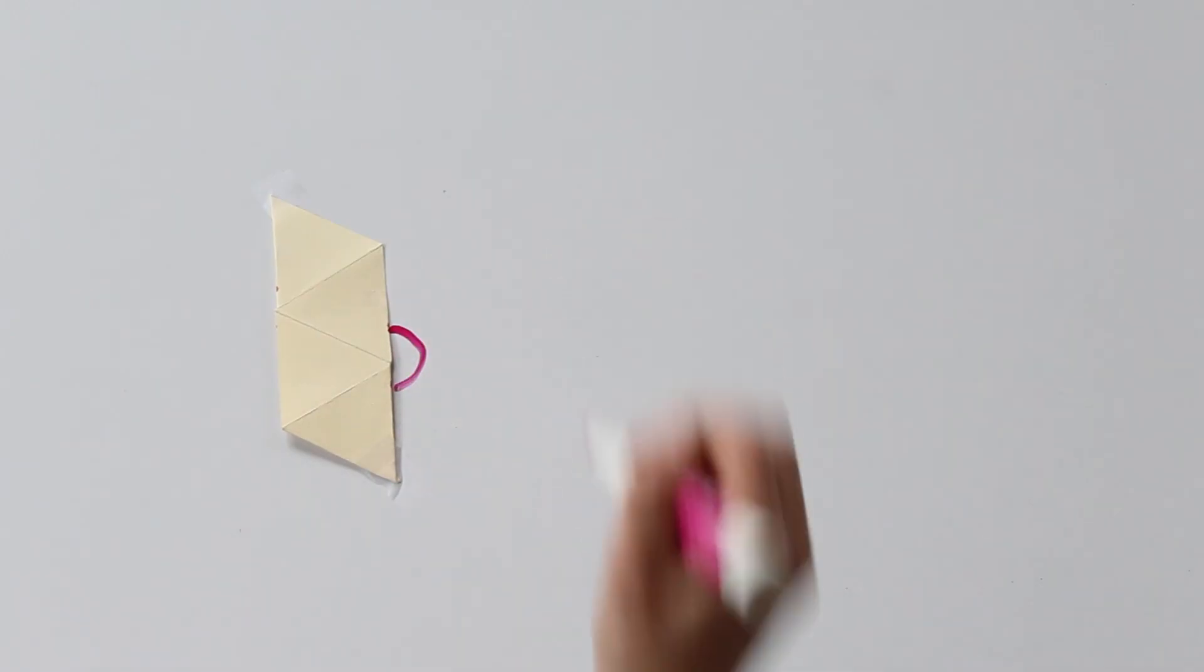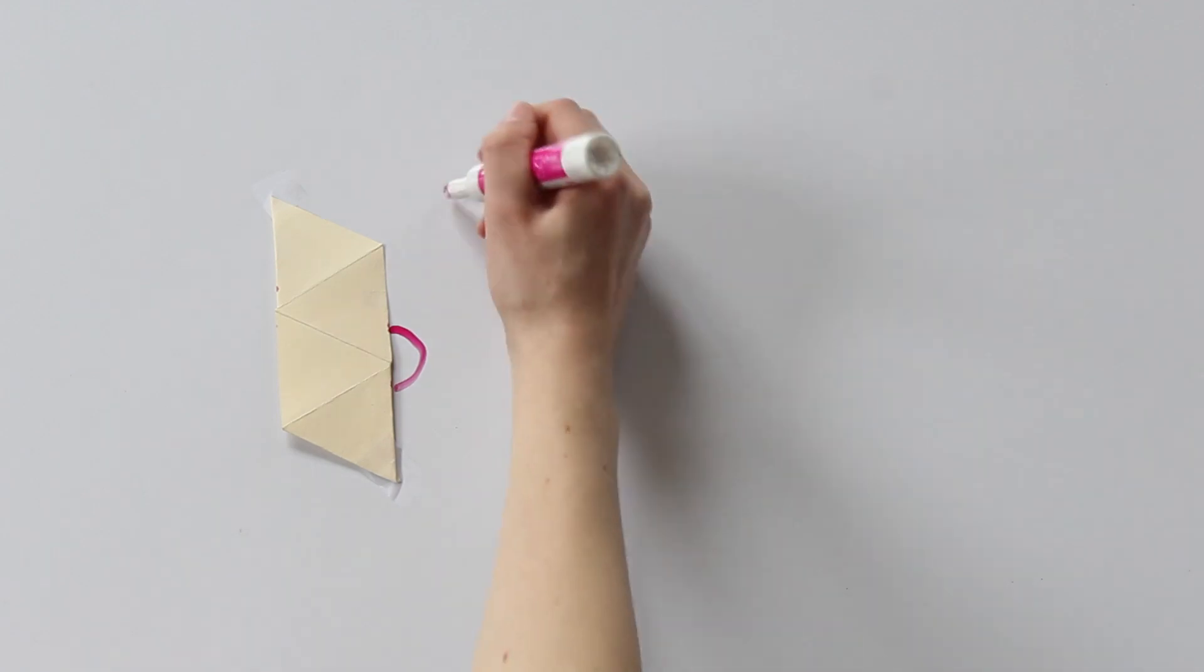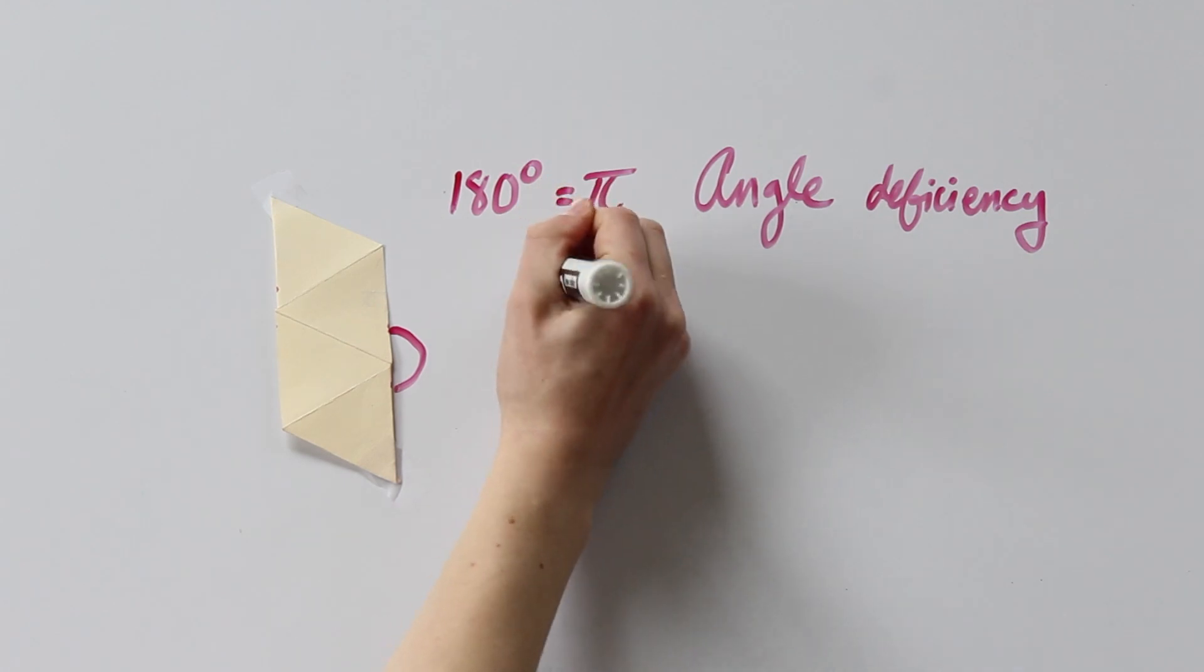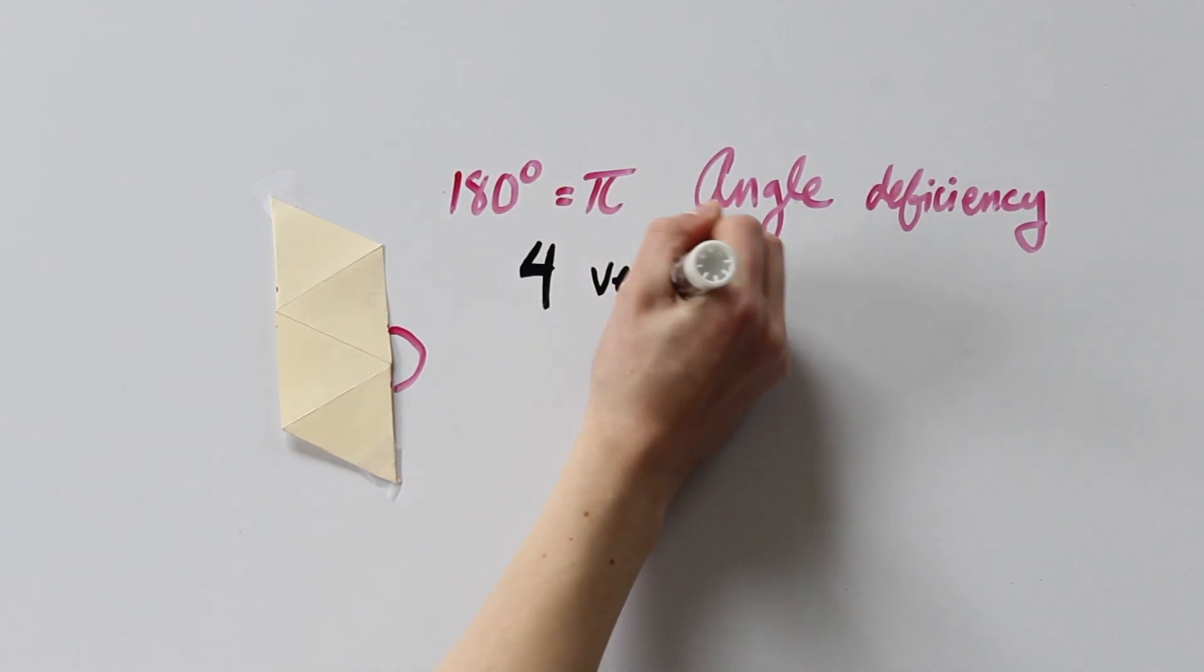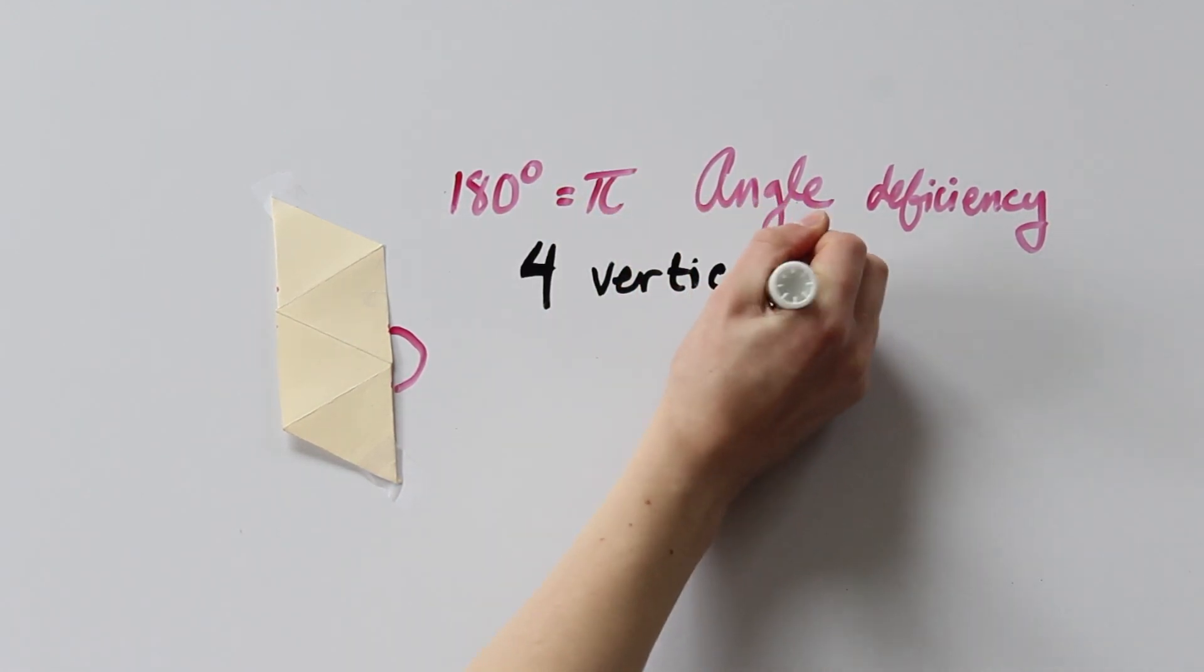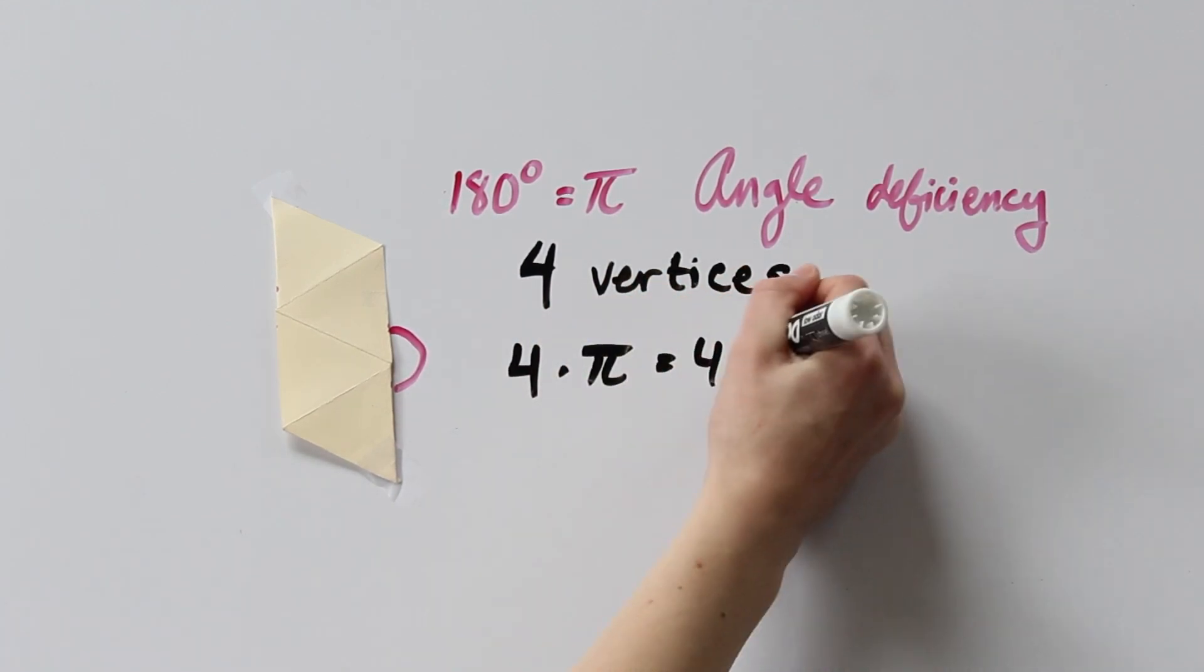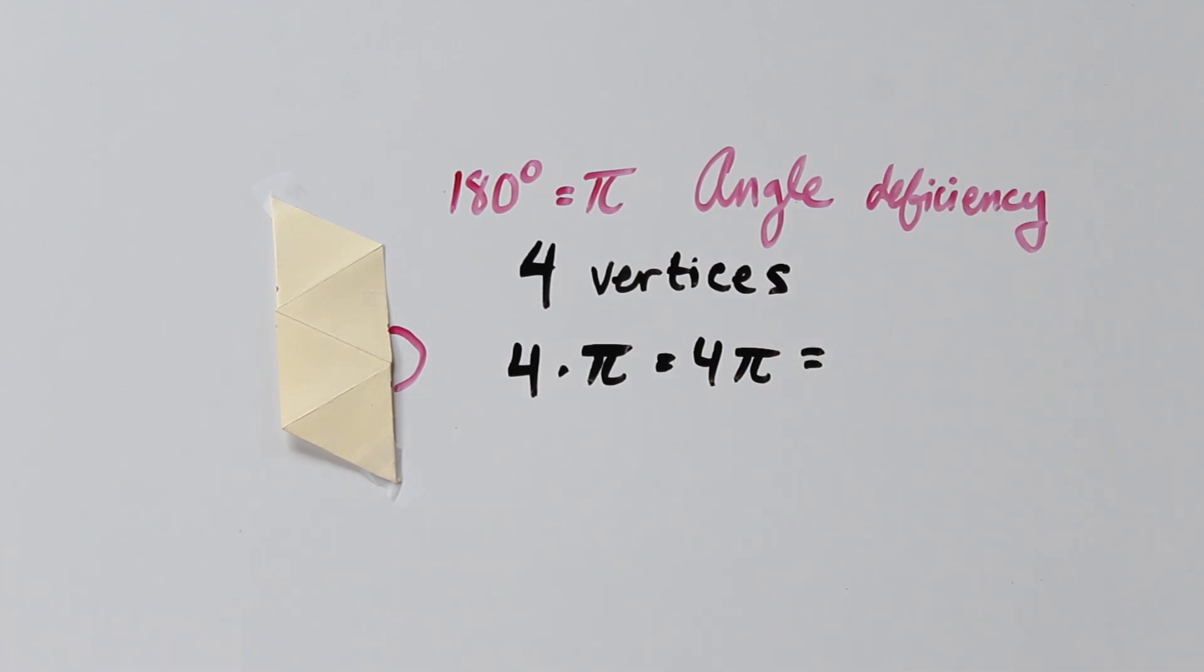This vertex here has an angle deficiency of 180 degrees, or pi. And even though some of the angles in the net look a little different, we know that a tetrahedron has four identical vertices. So all of the vertices have an angle deficiency of pi. That's four vertices times pi angle deficiency, giving 4 pi total angle deficiency.